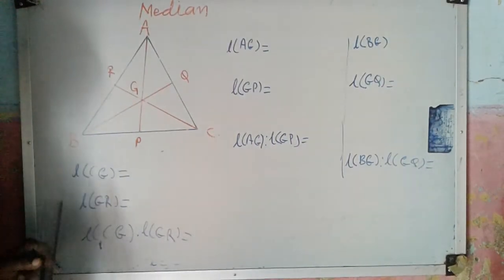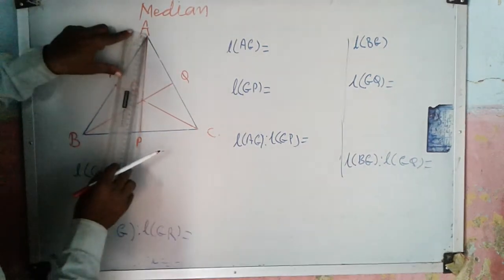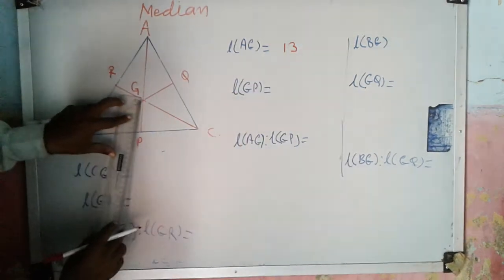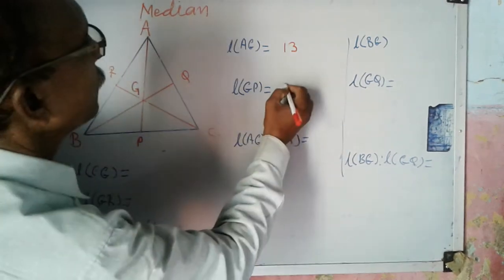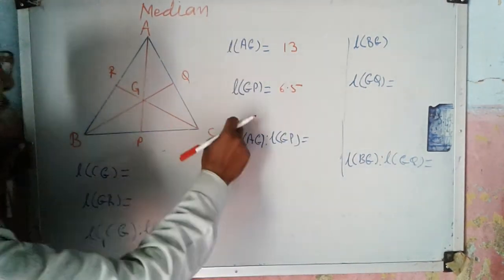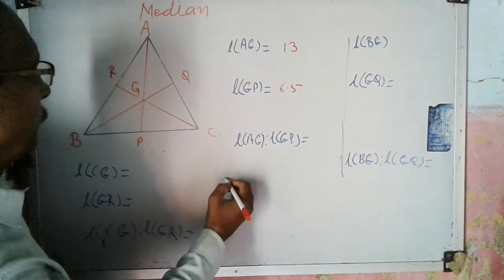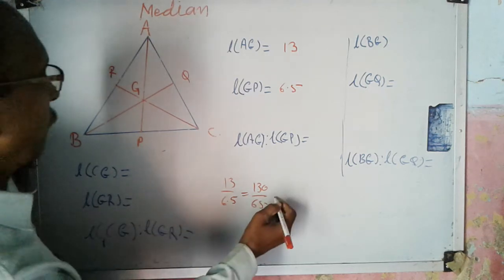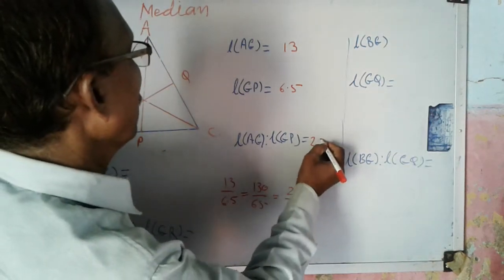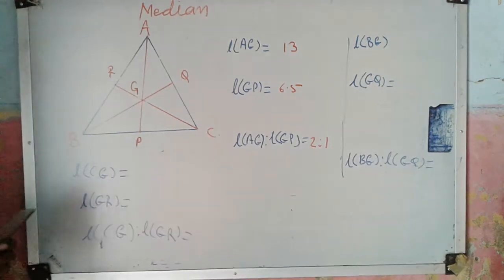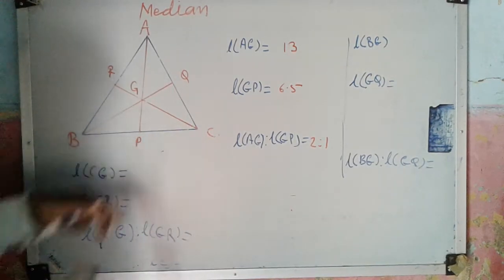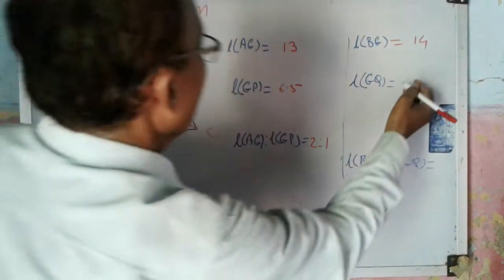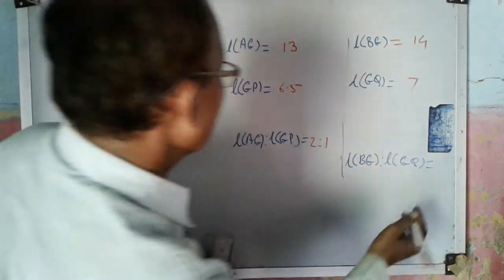See here: length of AG is equal to 13, and length of GP is equal to 6.5. Now we will take the ratio AG to GP, that means 13 upon 6.5, which is equal to 2 upon 1. That is, this ratio is 2 is to 1. Now for the next median BQ: BG is equal to 14, and GQ is equal to 7. This ratio 14 upon 7 is equal to 2 is to 1.